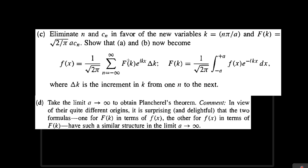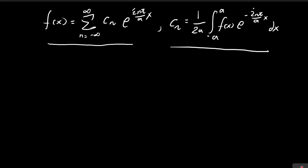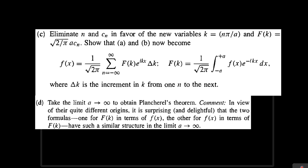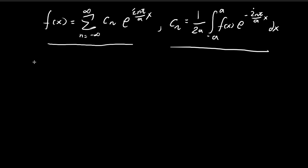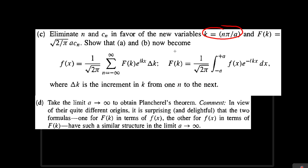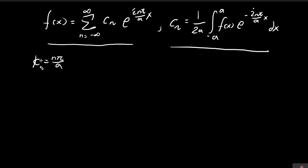In order to prove that this expression can indeed represent f of x, we're going to have to manipulate these expressions a bit. I'm going to start off by substituting in k, where k is equal to n pi over a. I personally like to add a subscript n to k to signify that for every different n, there is a different k, so that there is not just one single k that applies to every choice of n.